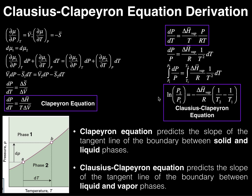To conclude this video, hopefully you've understood where these two equations are derived from and how they arise — they have to do with a phase diagram. The Clapeyron equation in this form is used to predict the slope of the tangent line between solid and liquid phases. The Clausius-Clapeyron equation is used for the same thing but for liquid and vapor phases, because gases do not have a defined volume — they're much larger in volume than liquids or solids.